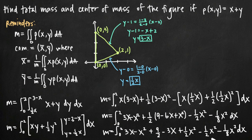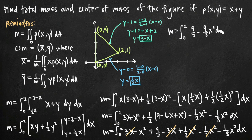We can cancel several terms: 3x minus 3x cancels, plus one-half x² minus one-half x² cancels. What remains is the integral from 0 to 2 of nine-halves minus nine-eighths x² dx. We combined the x² terms: negative x² is negative eight-eighths x², minus one-eighth x² gives negative nine-eighths x².